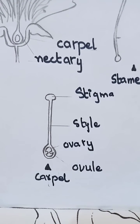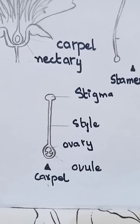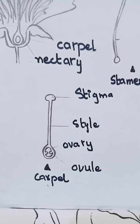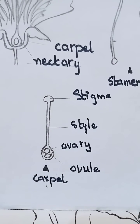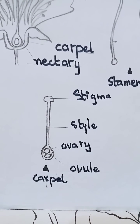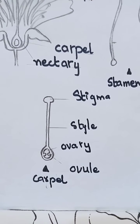Here is the structure of a carpel. There is a stigma. The stigma is the sticky top of the carpel which collects the pollen grains.